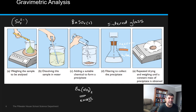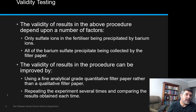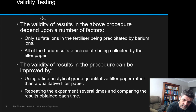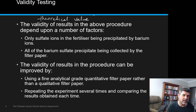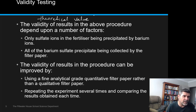We then dry the sample — we don't want to weigh it wet, as that would include the mass of water along with our precipitate. Once it's dry, we weigh it to get the mass of precipitate and work backwards. When analyzing results, remember that we have a theoretical value from the source — for example, a fertilizer label should tell us how much ammonium sulfate to expect. That gives us a value to compare against our empirical or experimental results.